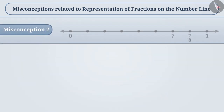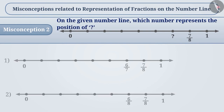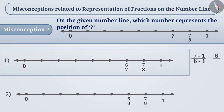Misconception 2: On the given number line, which number represents the position of the question mark? To find the number that represents the question mark, 1 is subtracted from the numerator and denominator of the next number 7 by 8. By doing so, we get the answer 6 by 7, which is an incorrect answer.